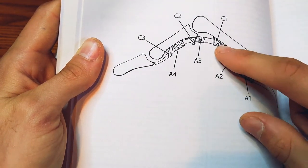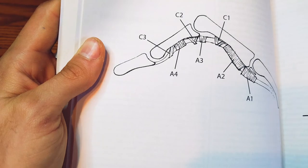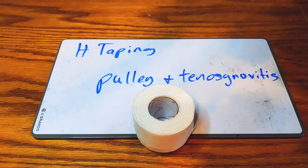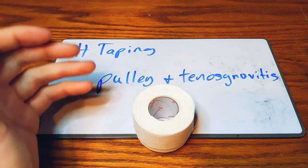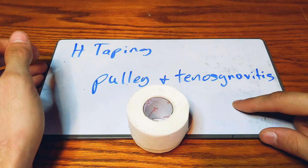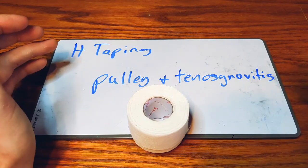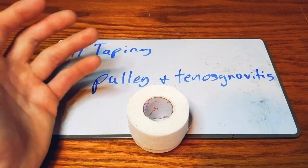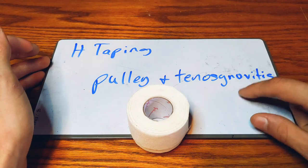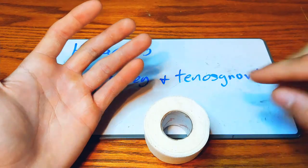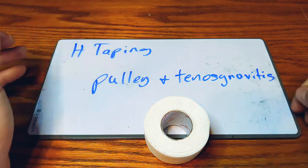So when those things get torn or strained, this will be a good thing to check out. And then tenosynovitis, which is basically inflammation of the fluid-filled sheath that surrounds your tendon. If you're having a lot of swelling in your hand, you might be experiencing that.